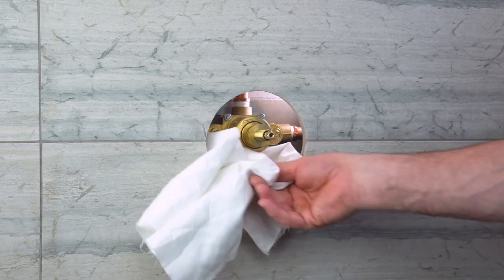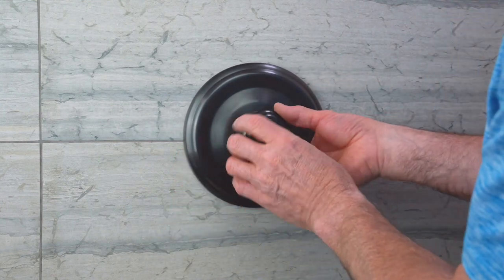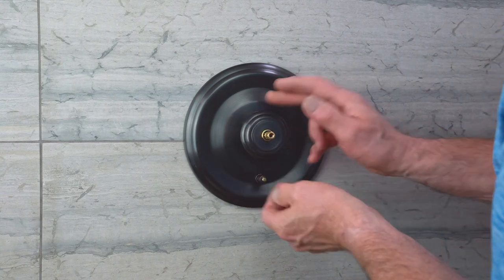Remove the rag and reinstall the faceplate, escutcheon, hub, diverter knob, and handle.